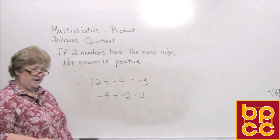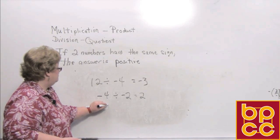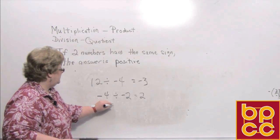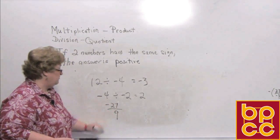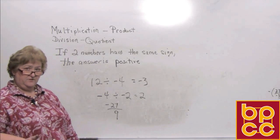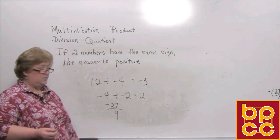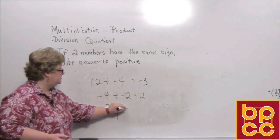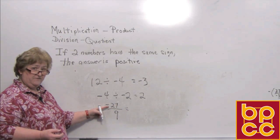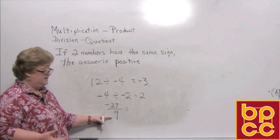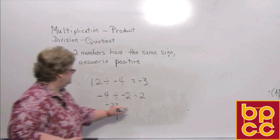Let's try it in fraction form. Let's say we have a negative 27 over 9, which means negative 27 divided by 9. We have one negative, so we know the answer is going to be negative. 27 divided by 9 is 3, but it's going to be a negative 3.